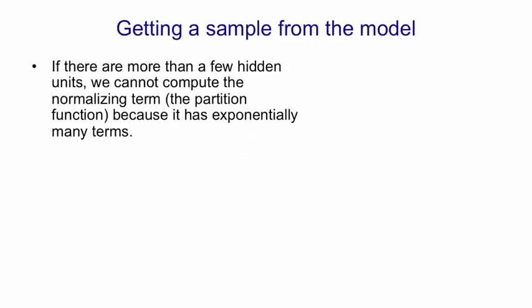Now let's ask how we get a sample from the model when the network's bigger than that. Obviously, in the network we just computed, we can figure out the probability of everything because it's small. But when the network's big, we can't do these exponentially large computations.